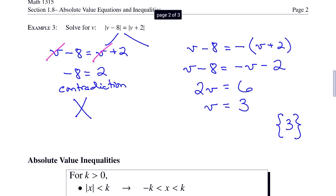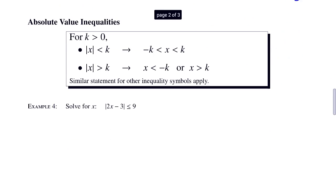Next, let's look at absolute value inequalities. For k greater than 0, we have two conditions. If the absolute value of x is less than k, then we create the three-sided compound inequality: negative k is less than x is less than k, and then solve for x. If the absolute value of x is greater than k, then we set up two separate inequalities with an or: x is less than negative k, or x is greater than k. If we have the equality part in the inequalities, then similar statements apply.